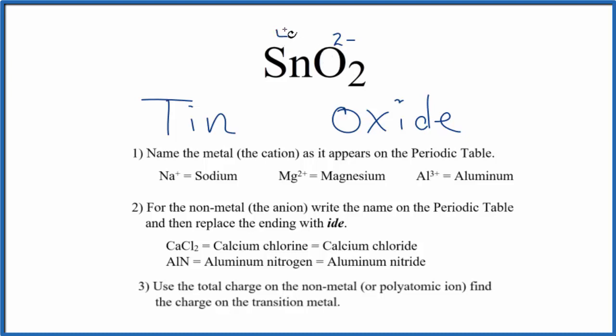And the tin has to be four plus for the charge to balance out, to give us a net charge of zero. And to show the four plus on the tin here, we write a Roman numeral four and we put that in parentheses. So the name for SnO2 is tin four oxide.